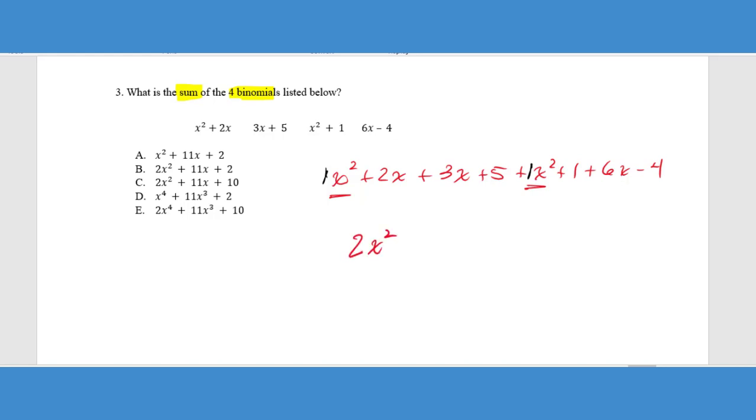Now the big mistake that I see students make here is they want to make this 2X to the fourth. Remember, we're not adding the exponents. You only do that when you multiply these together and that would lead to adding the exponents. Here we're just carrying the term and adding the coefficient. So we just keep the X squared and we add the numbers together.